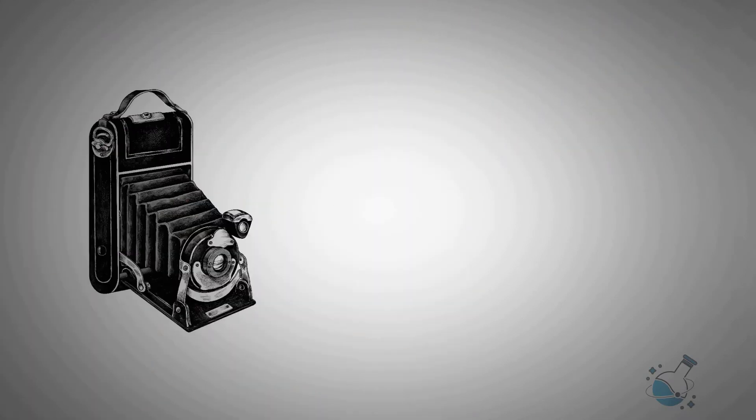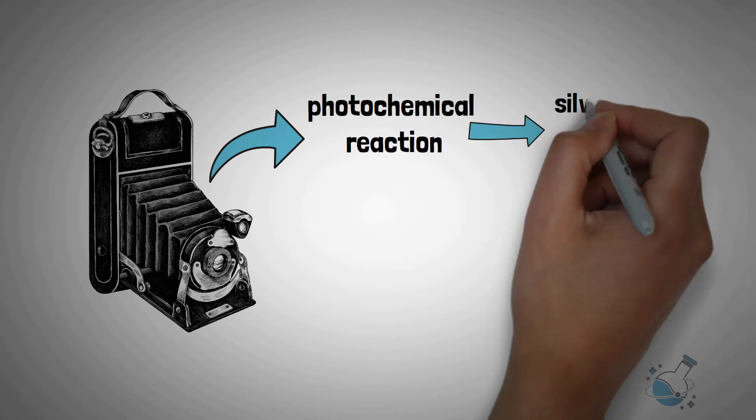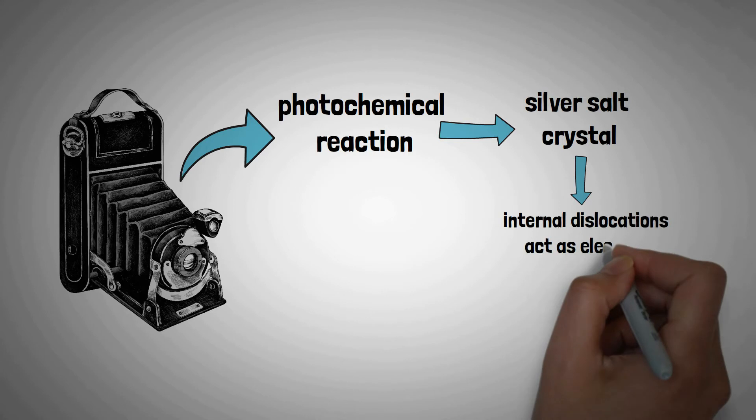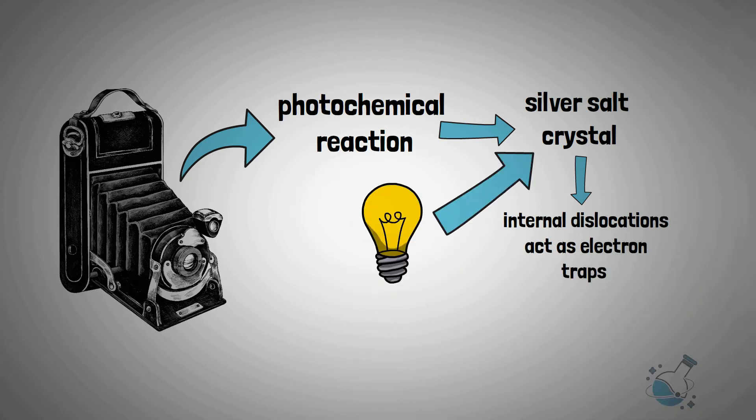Exposure of the emulsion in a camera results in a photochemical reaction on the surface of the silver salt crystal. In silver halide crystals, internal dislocations act as electron traps. When some energy in the form of light is absorbed by the silver halide, a free atom of silver is liberated.